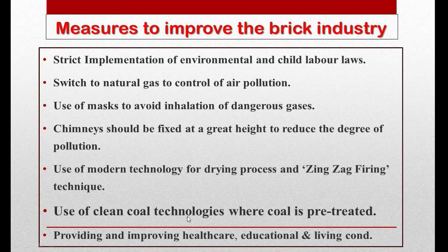Major measures to improve the brick kiln industries include strict implementation of environmental and child labor laws. Strict implementation of environmental laws is particularly needed because smog — the mixture of smoke and fog — has increased significantly in recent years, especially in upper Punjab and Lahore. The Government of Punjab had previously shut down brick kiln industries to control smog.